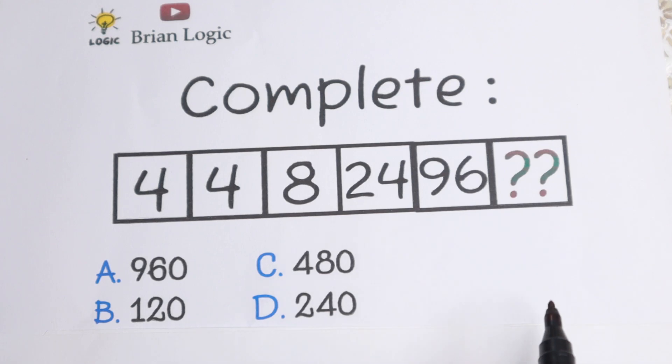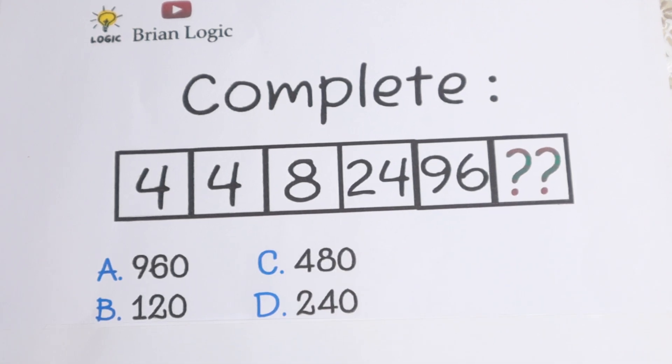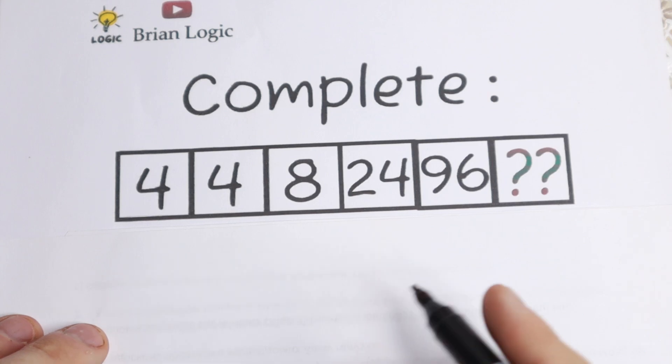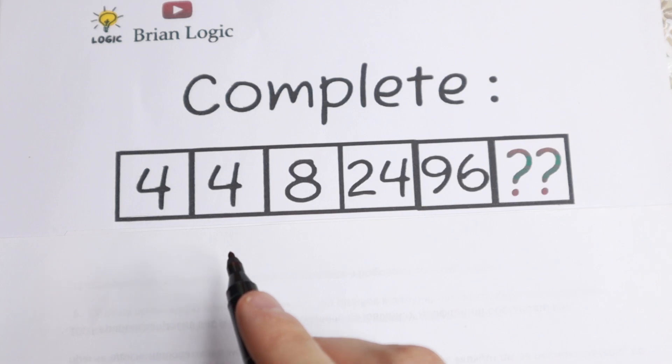So right now I'm going to solve it, but you choose one of the options and put your option in a comment. So we have 4, 4, 8, 24, and 96, and we need to find the last number. How can we do this? Take a look, we have a lot of even numbers, it's good for us, and let's divide the second number by the first one.